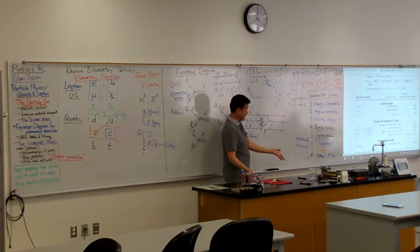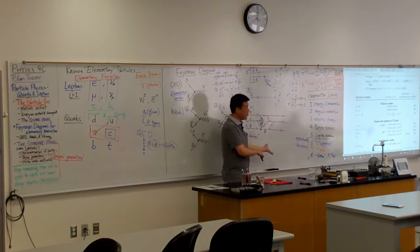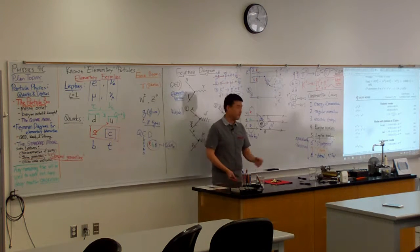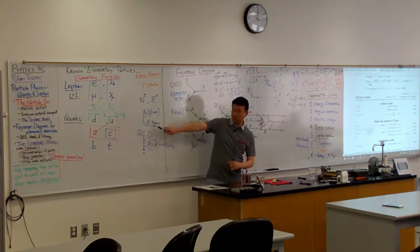That's the colorless state. So colorless gluon cannot mediate strong interaction. So you end up with nine minus one, eight gluons.